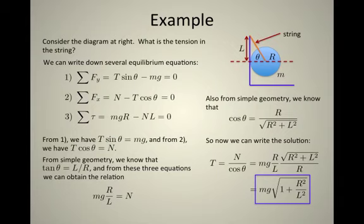So as R gets really, really small, notice that this expression just inside the square root goes to 1, and the tension just becomes mg. In other words, it's like a ball hanging straight down.